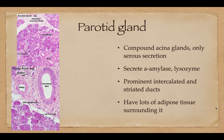The parotid gland, the one in the cheek, is the largest one, and it only makes a serous solution. It secretes alpha amylase and lysozymes to break down carbohydrates in the mouth. It's defined by very large and very prominent striated ducts — these ducts are pretty big. They have a lot of adipose tissue surrounding them, really depending on the person; some people have a lot of buccal fat, some people don't. The facial artery from anatomy is also associated with this region.